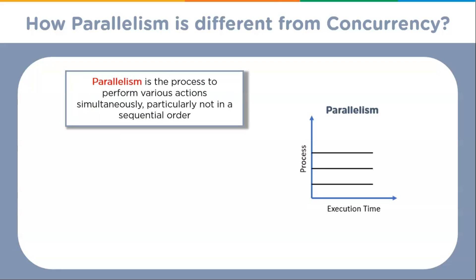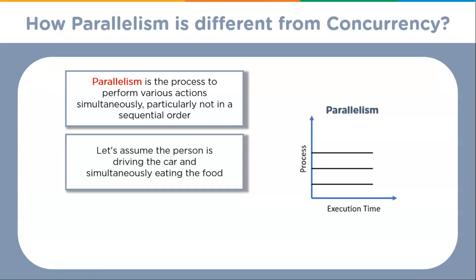Moving on, we will understand how parallelism is different from concurrency. Both parallelism and concurrency produce the same result but with different approaches. Parallelism is the process to perform various sections simultaneously, particularly not in sequential order. Let's understand parallelism using the same example: let's assume the person is driving the car and simultaneously eating the food. In this scenario the person performs both actions simultaneously — this is parallelism.